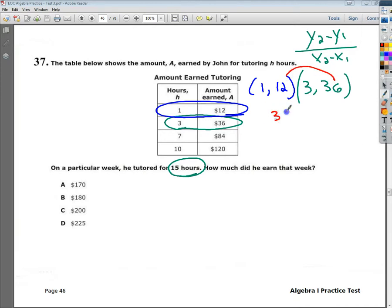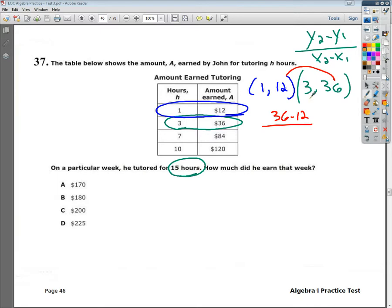the right minus the right, so 36 minus 12, over the left minus the left, which is 3 minus 1. 36 minus 12 is just going to give us 24. 3 minus 1 is just going to give us 2.